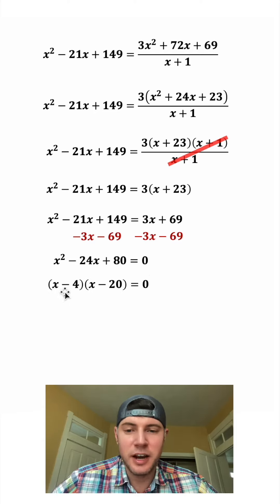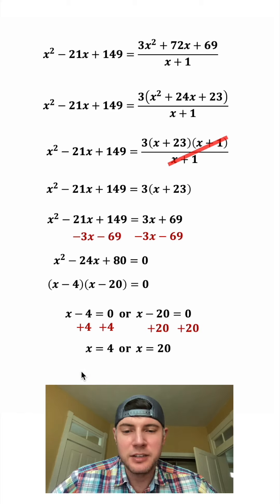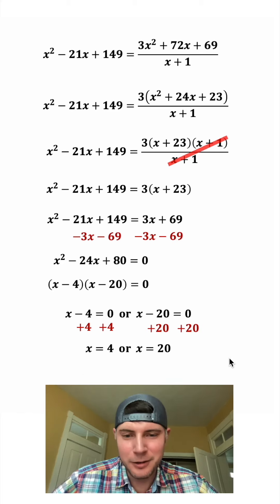This times this equals 0, so we can say either this equals 0 or this equals 0. And then we can add 4 to both sides or add 20 to both sides, and we get x equals 4 or 20. How exciting.